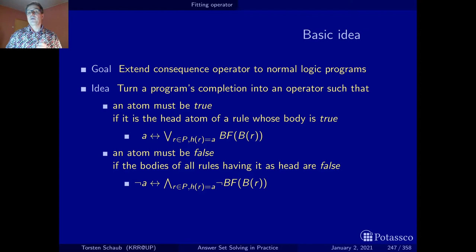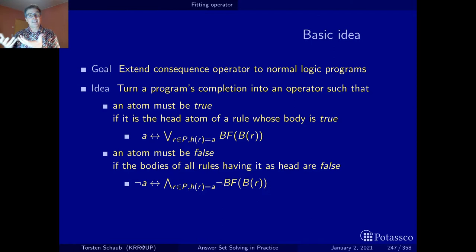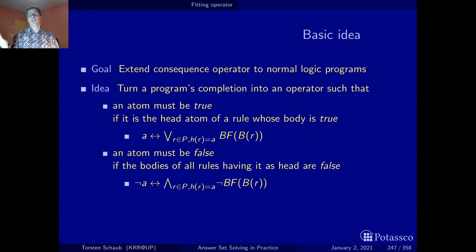There is one subtlety we should not drop. Keep in mind that we now deal with normal logic programs. For a body to be true, all positive body literals must have been found to be true and all negative body literals must also have been established to be false. On the other hand, for a body to be false, it's enough that there is one positive body literal that has been refuted or one negative body literal that has been found out to be true already. A counterexample is enough, and then the body has been established to be false and the rule is inapplicable.